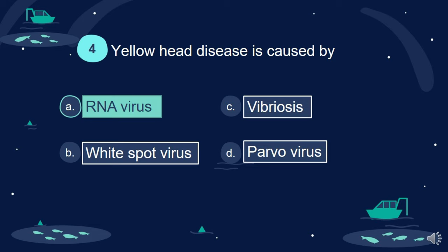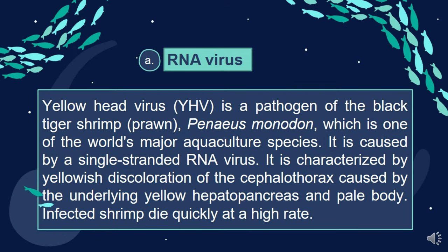Answer: A. RNA virus. Yellowhead virus is a pathogen of the black tiger shrimp, Penaeus monodon, which is one of the world's major aquaculture species. It is caused by a single-stranded RNA virus. It is characterized by yellowish discoloration of the cephalothorax caused by the underlying yellow hepatopancreas and pale body. Infected shrimp die quickly at a high rate.